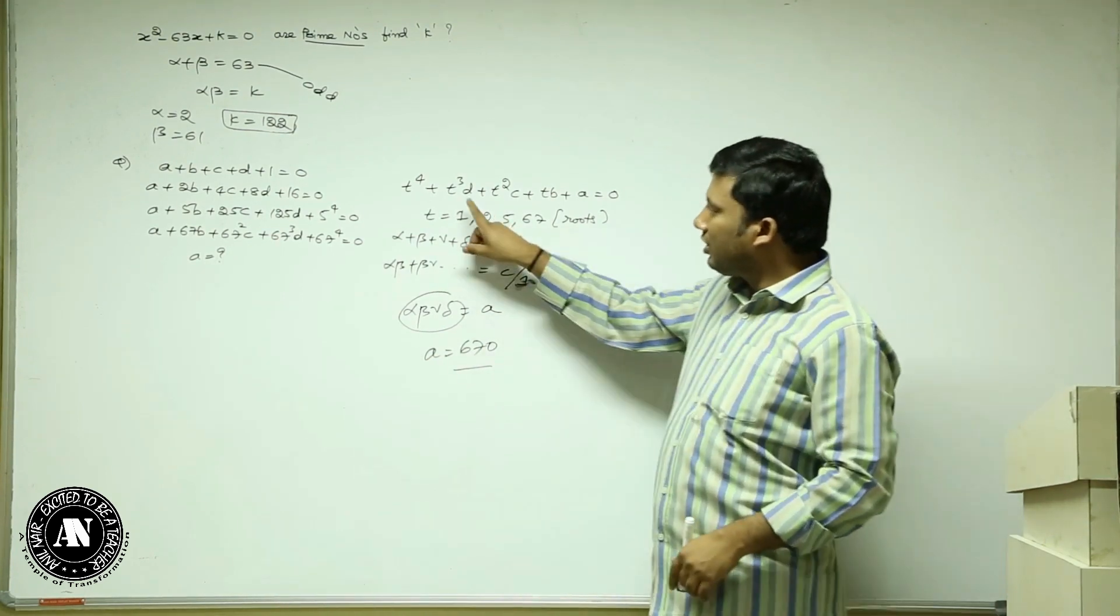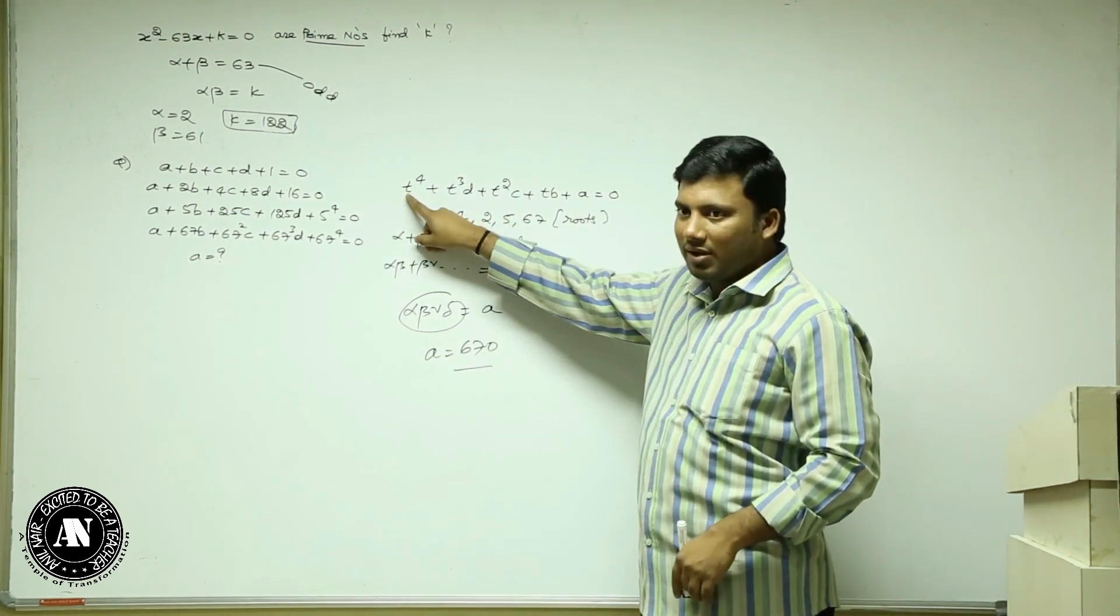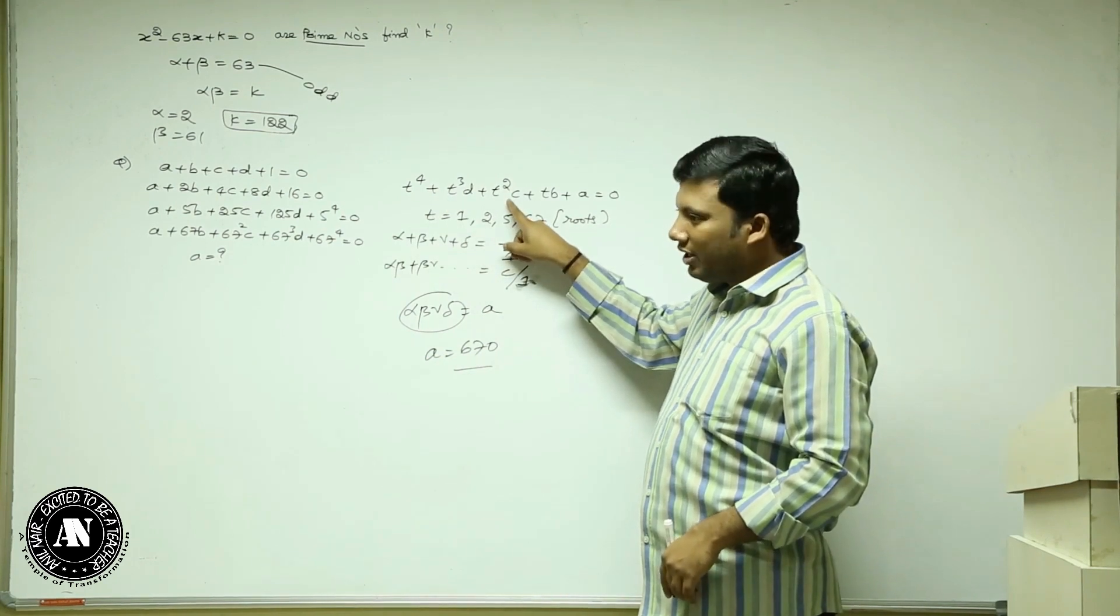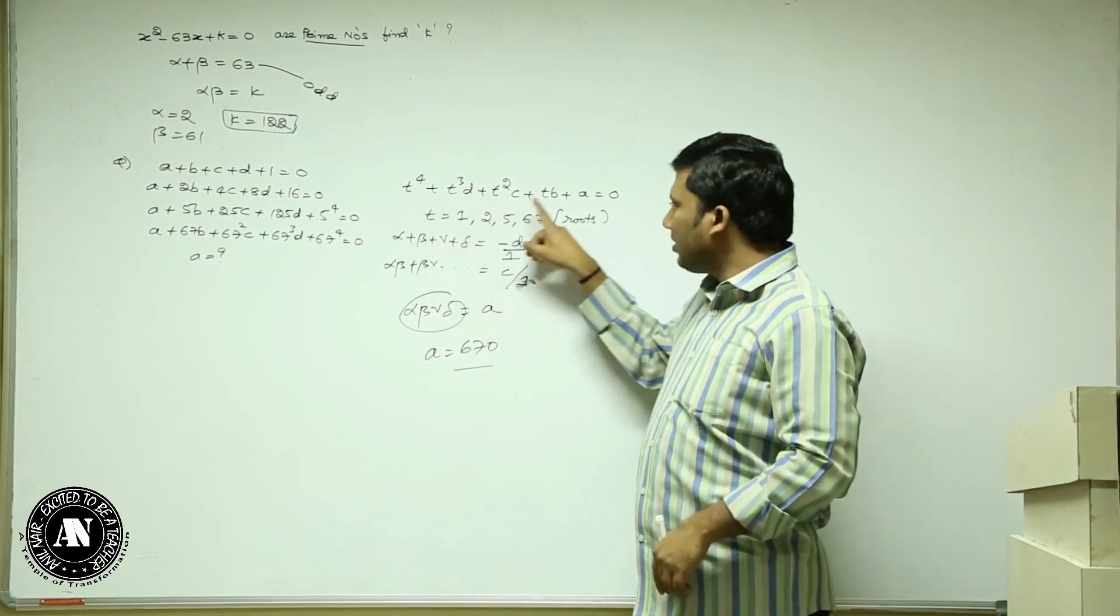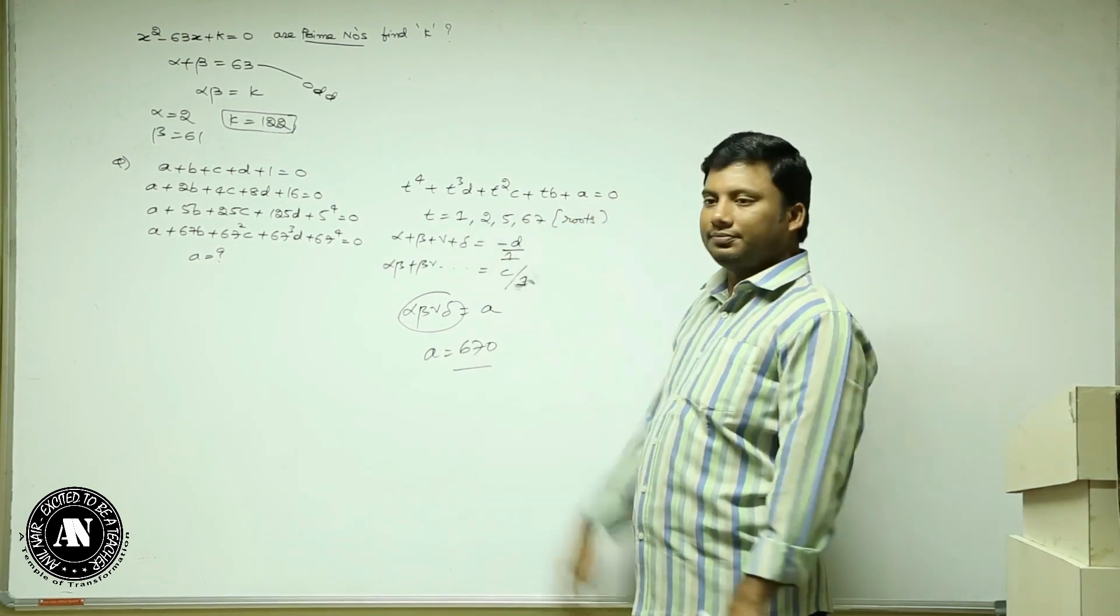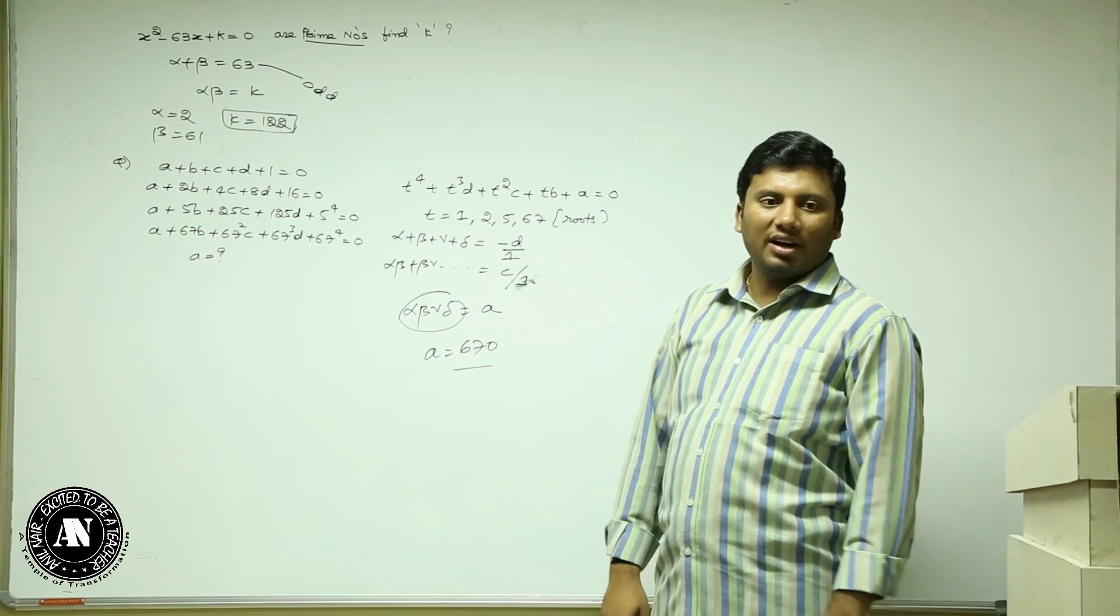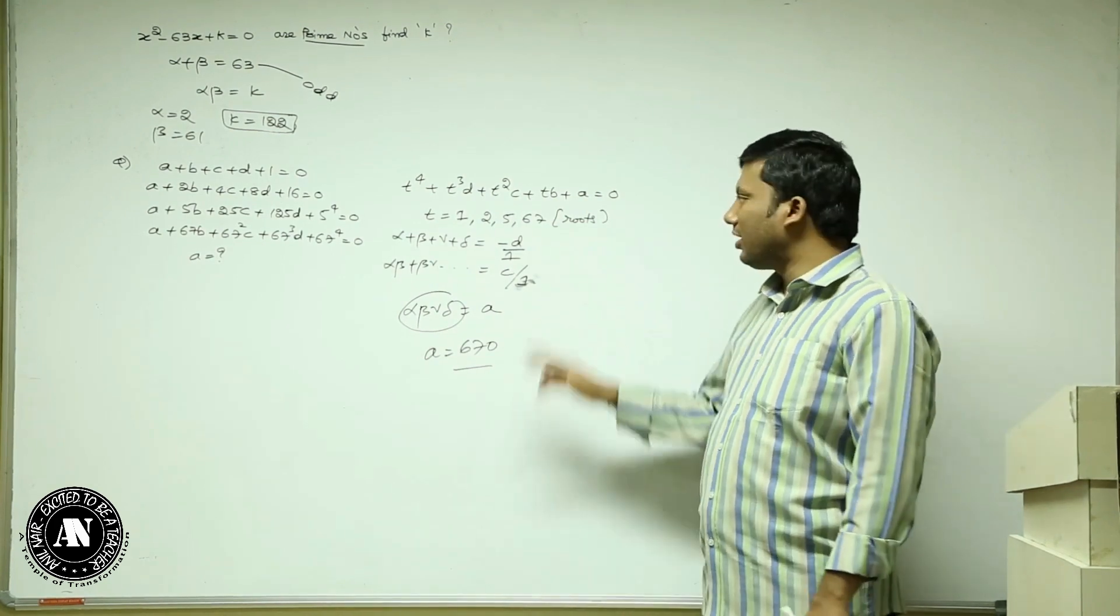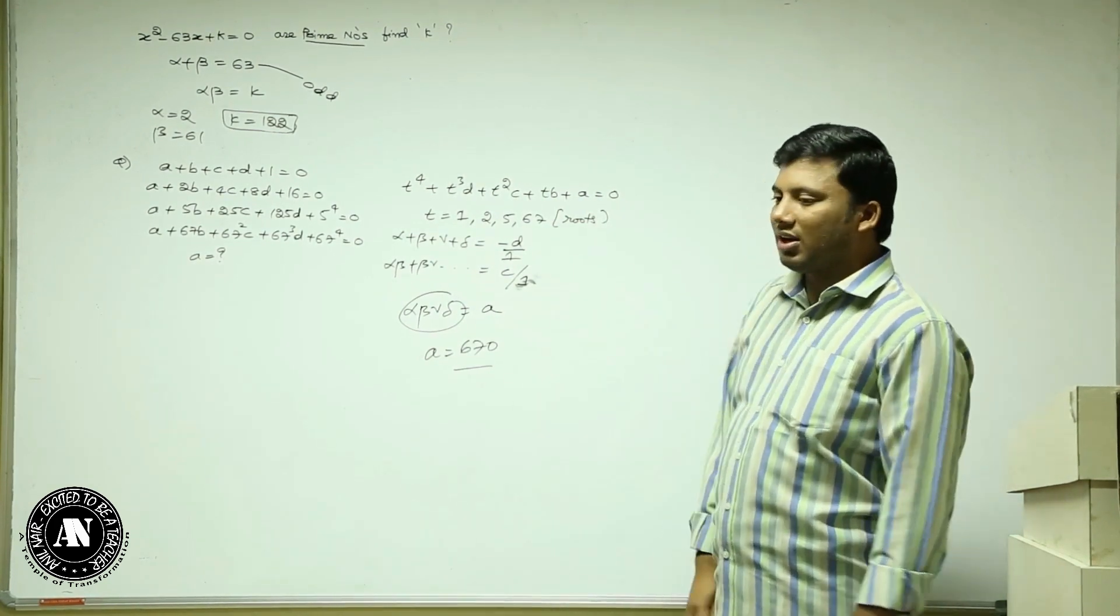Sum of the roots taken three at a time is minus D. Product of the roots taken all at a time is E. Please put a star mark on this question.